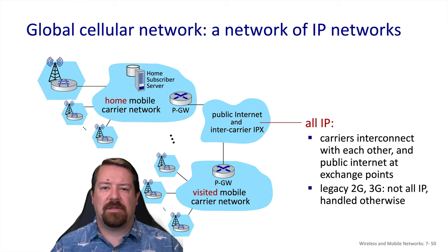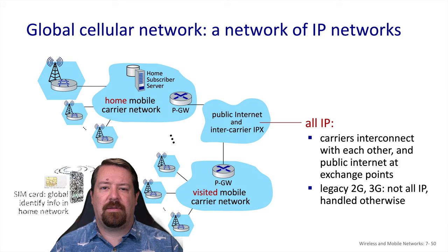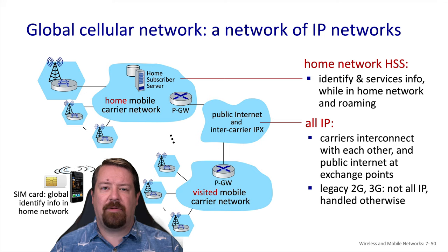The mobile wireless network is a collection of different providers. These providers peer with one another very similarly to the way the internet's ISPs do, using IP interconnects at internet exchange points. This is different from how it was handled before 4G, where there were dedicated interconnections for voice services. The IMSI number on the SIM card is a globally unique identifier, so no matter what network a device connects to, they can look up the home network for that IMSI number. The visited mobile carrier network then checks back with the home network to find out what services they will be able to bill the home network for in support of that subscriber.